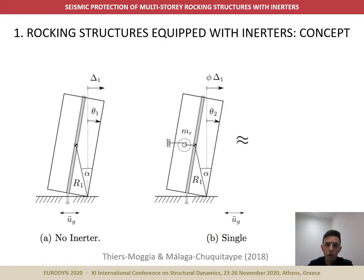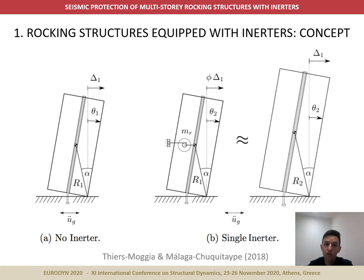Recent studies on seismic control of rocking structures have proposed the use of inertors, which are mechanical devices that develop resisting forces proportional to the relative acceleration between their terminals. In our previous paper, we have shown that these devices effectively reduce the frequency parameter of a rigid block. Accordingly, the rotation response of the inertor-equipped structure can be represented by a larger block of the same slenderness, resulting in lower seismic demands and enhanced stability due to the well-known size effect of the rocking behavior.